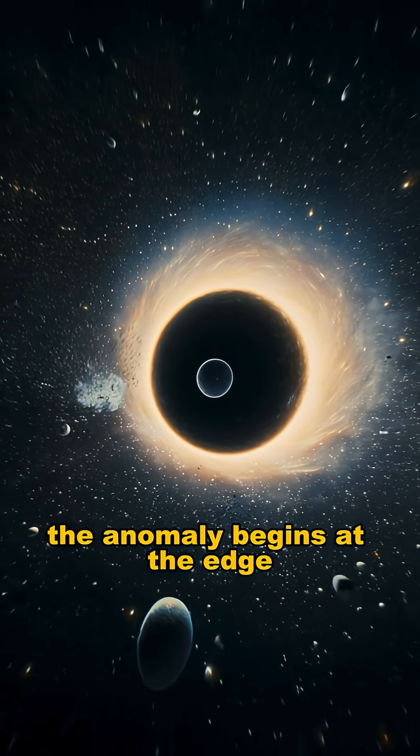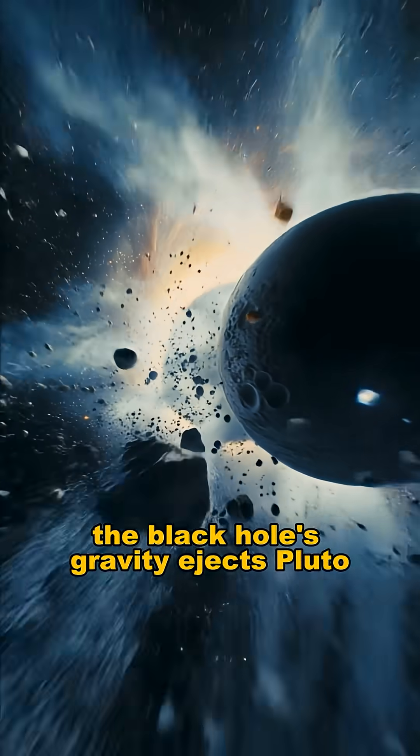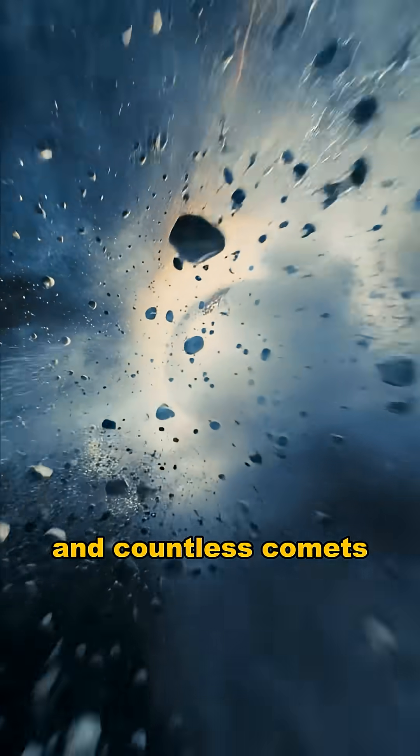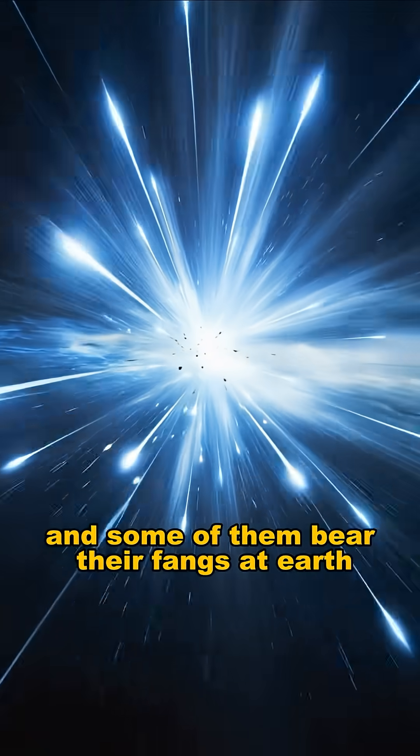The anomaly begins at the edge. The black hole's gravity ejects Pluto and countless comets, and some of them bear their fangs at Earth.